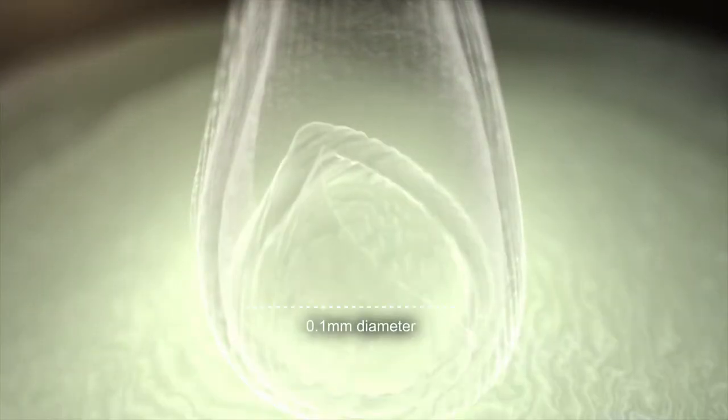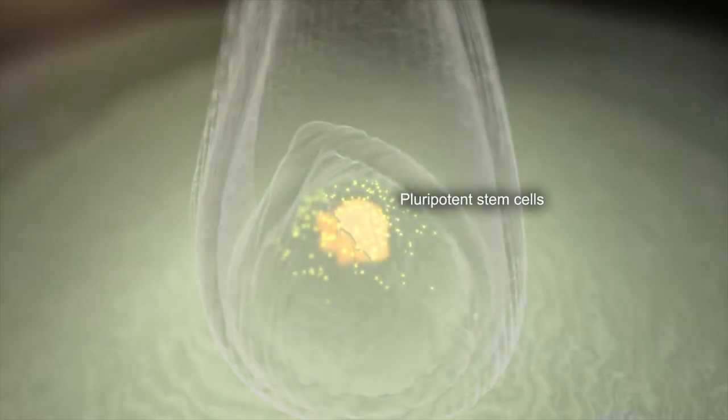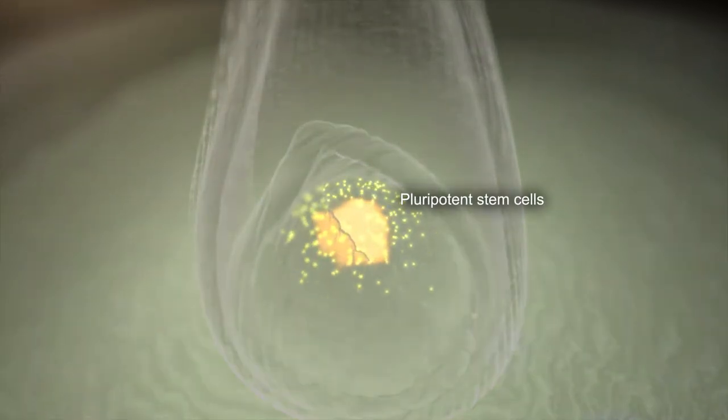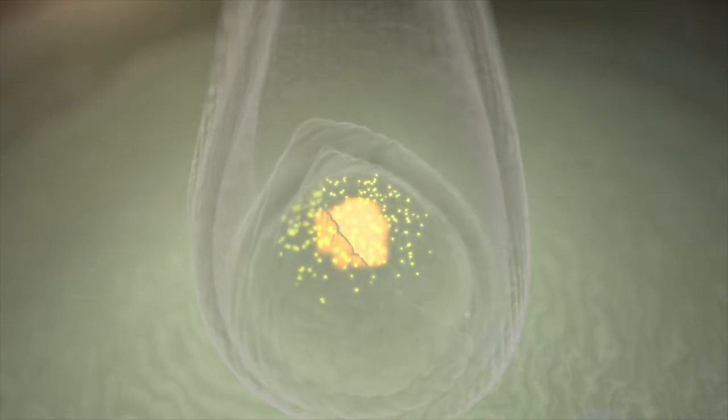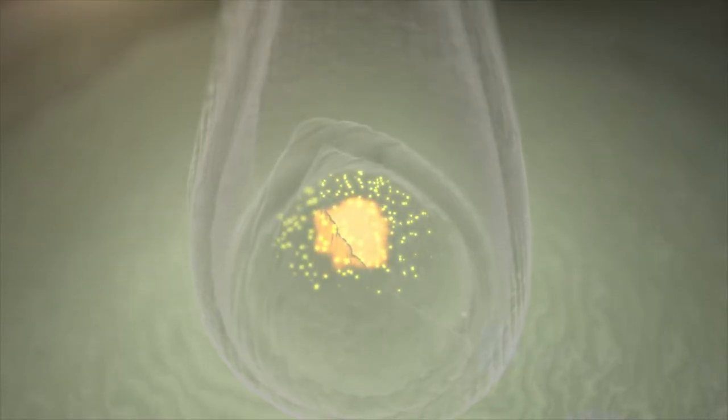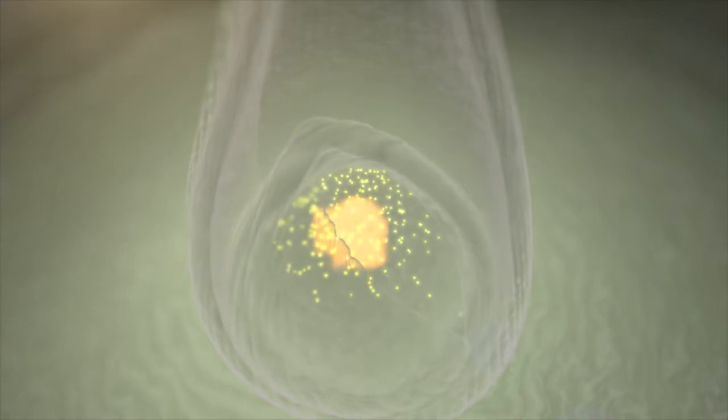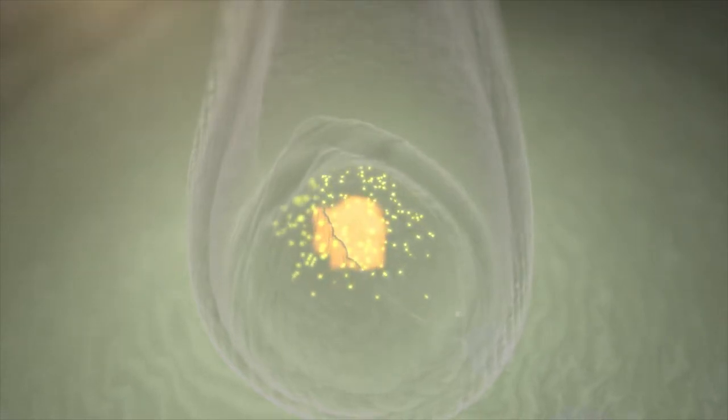The meristem is only a tenth of a millimeter across. There, pluripotent stem cells exchange signals with their neighbors to control their growth. Scientists are working to understand how this communication occurs because it may lead to improving the productivity of maize and other crops.